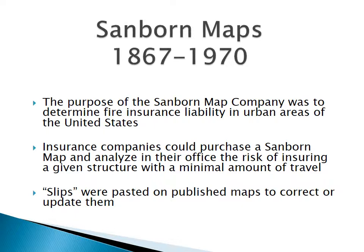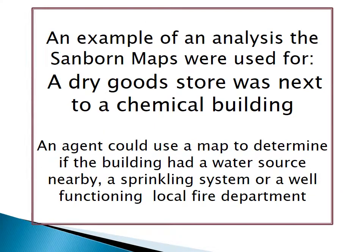Slips were pasted on published maps to correct or update them. A dry goods store located near a chemical building is a good example of how a map could be used by an insurance company for analysis. An agent could use a map to determine if the building had a water source nearby, a sprinkling system, or a well-functioning fire department.